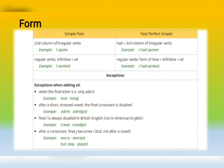The simple past: I spoke. The past perfect simple: I had spoken — you use the auxiliary verb 'had.' We have some exceptions when we add -ed. When the word ends in -e, only add -d, for example: love → loved. After a short stressed vowel, the final consonant is doubled, for example: admit → admitted. Final -l is always doubled in British English but not in American English, for example: travel → travelled.